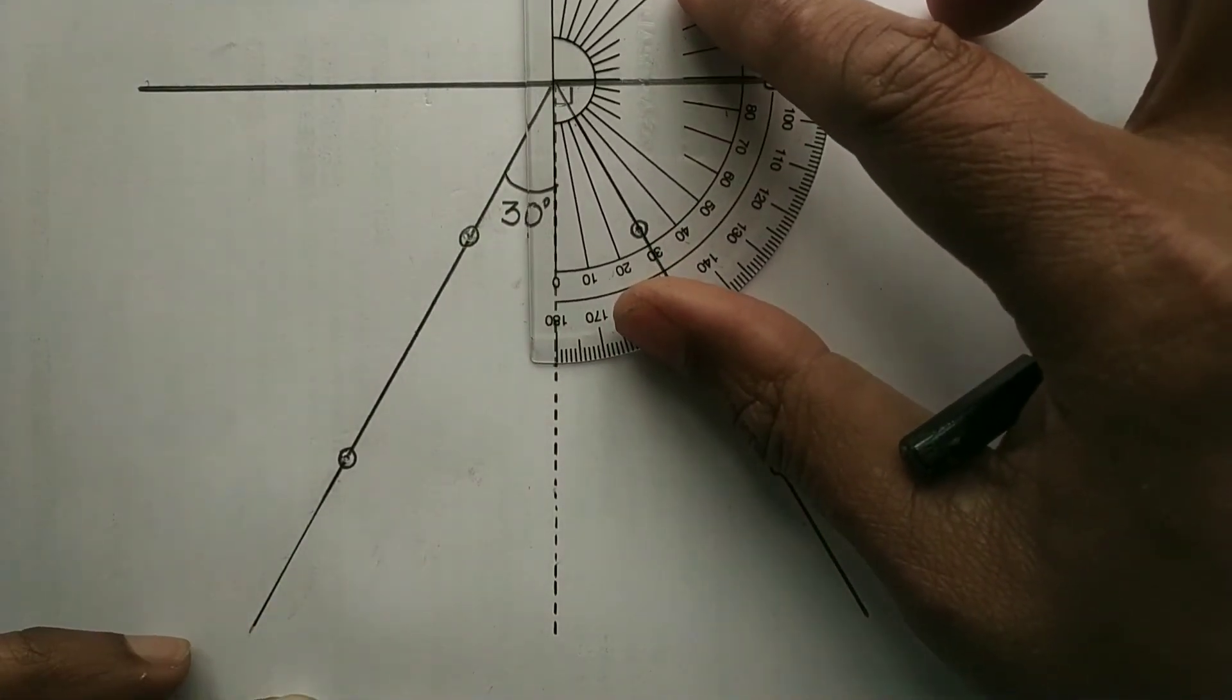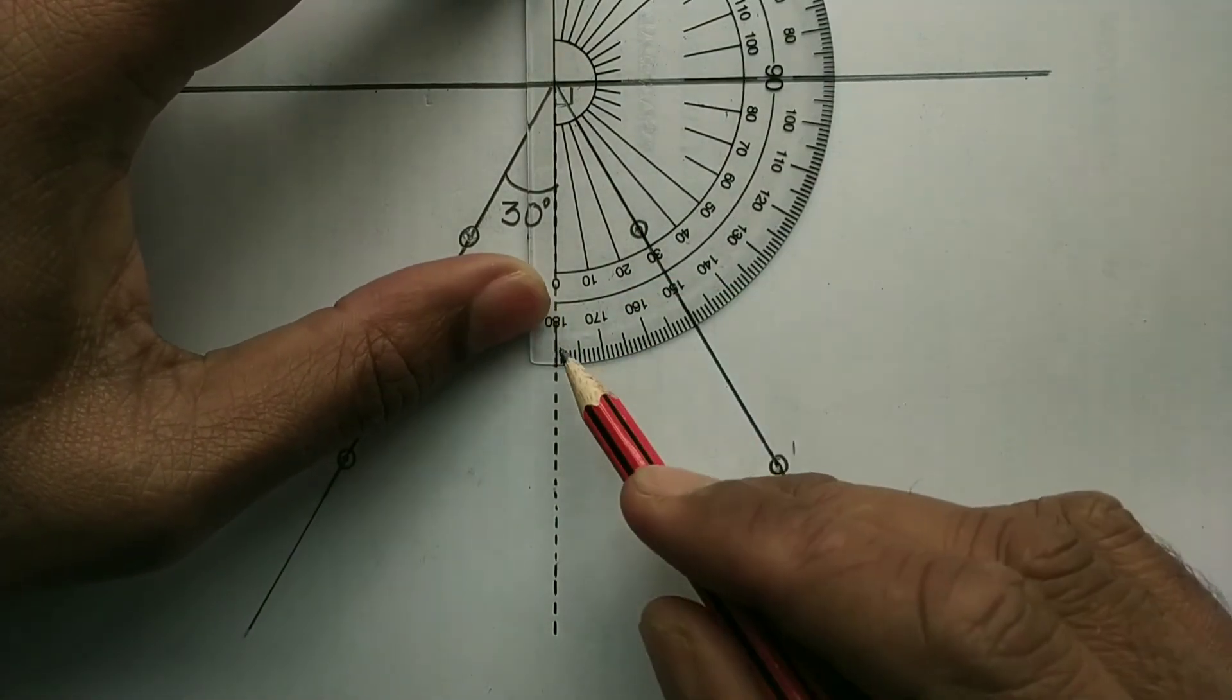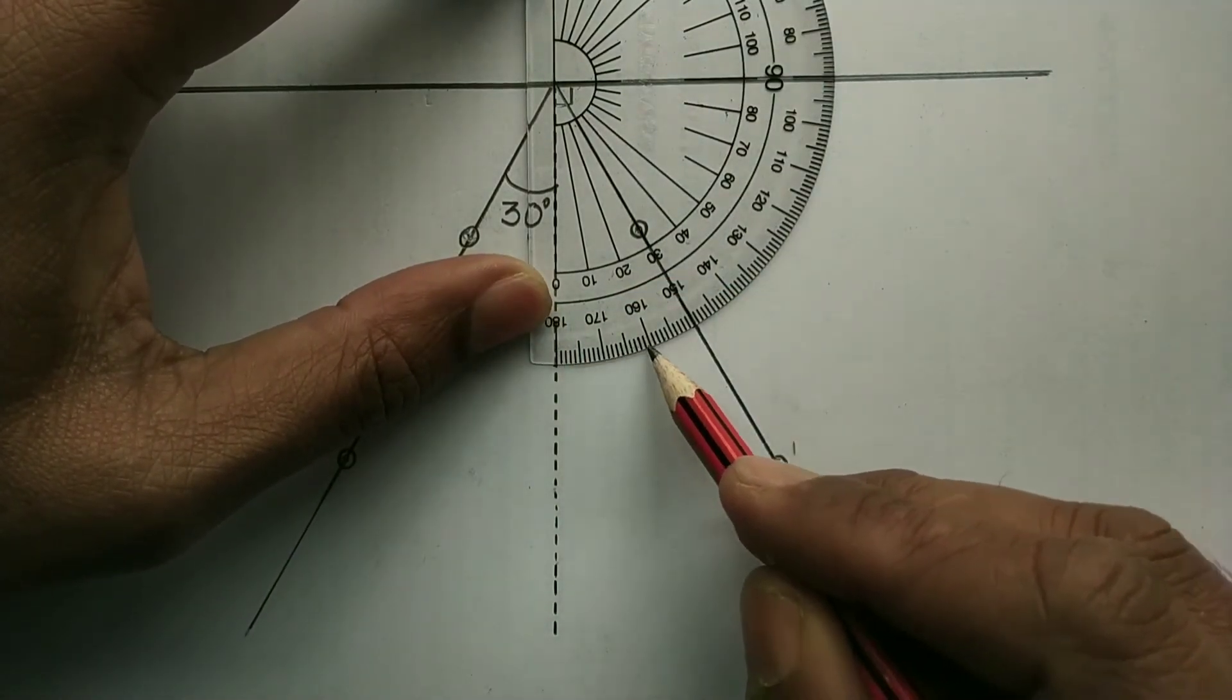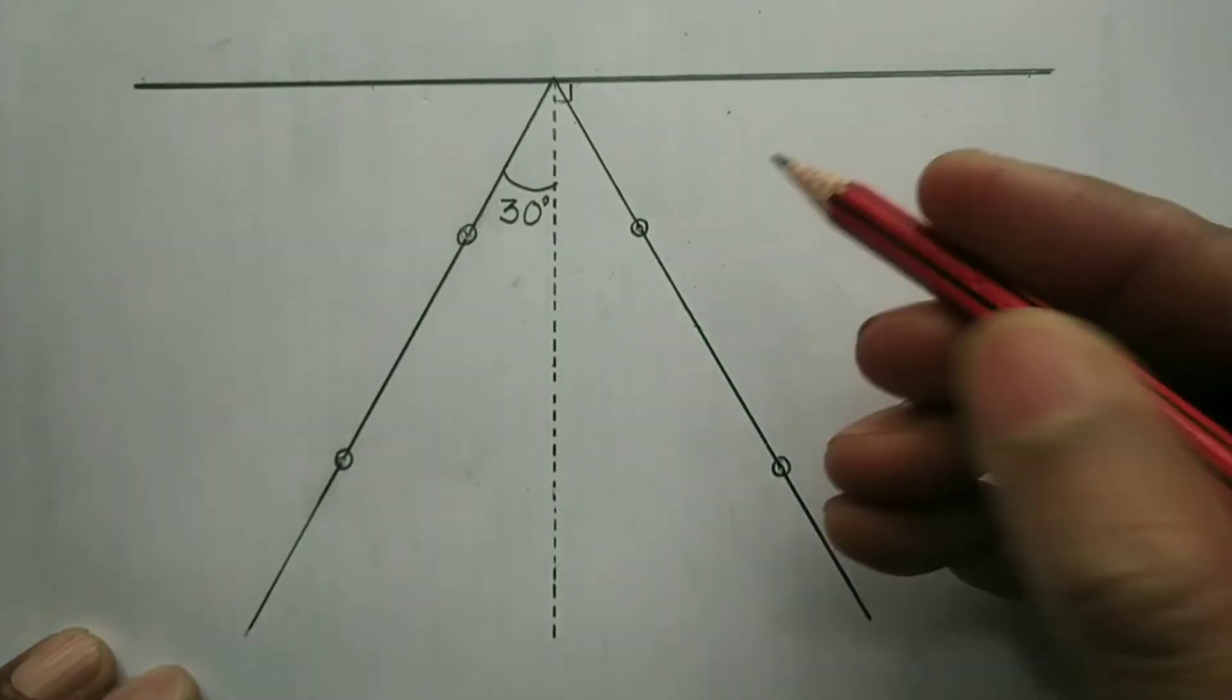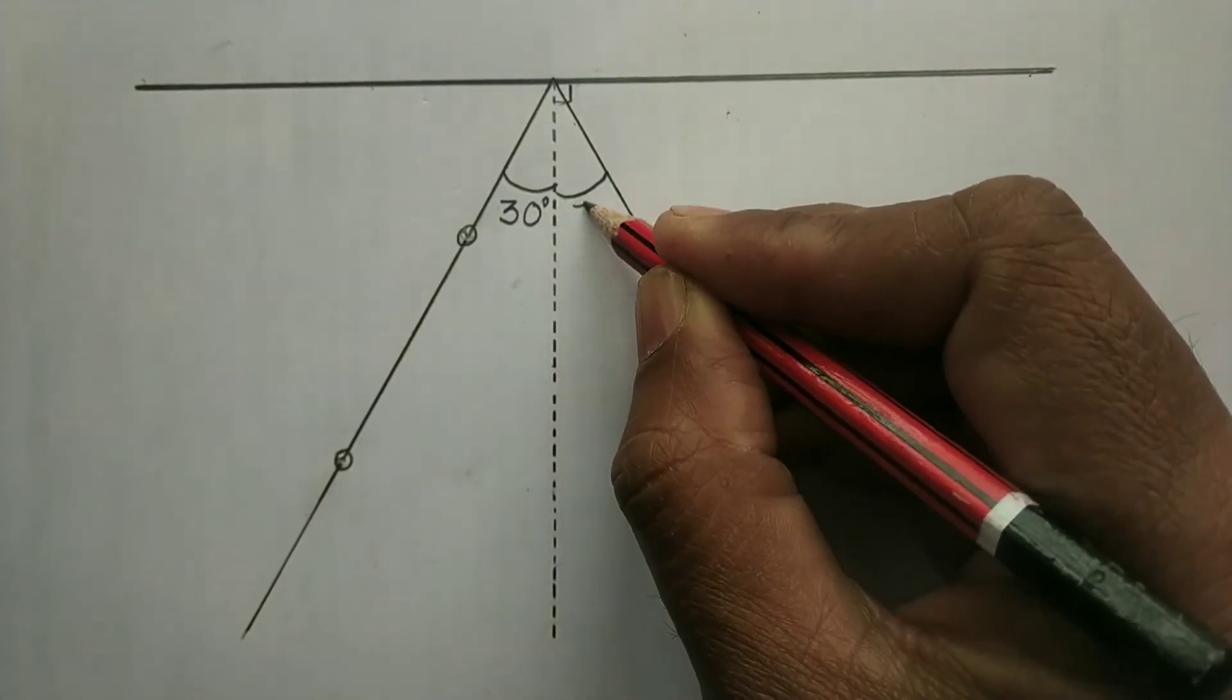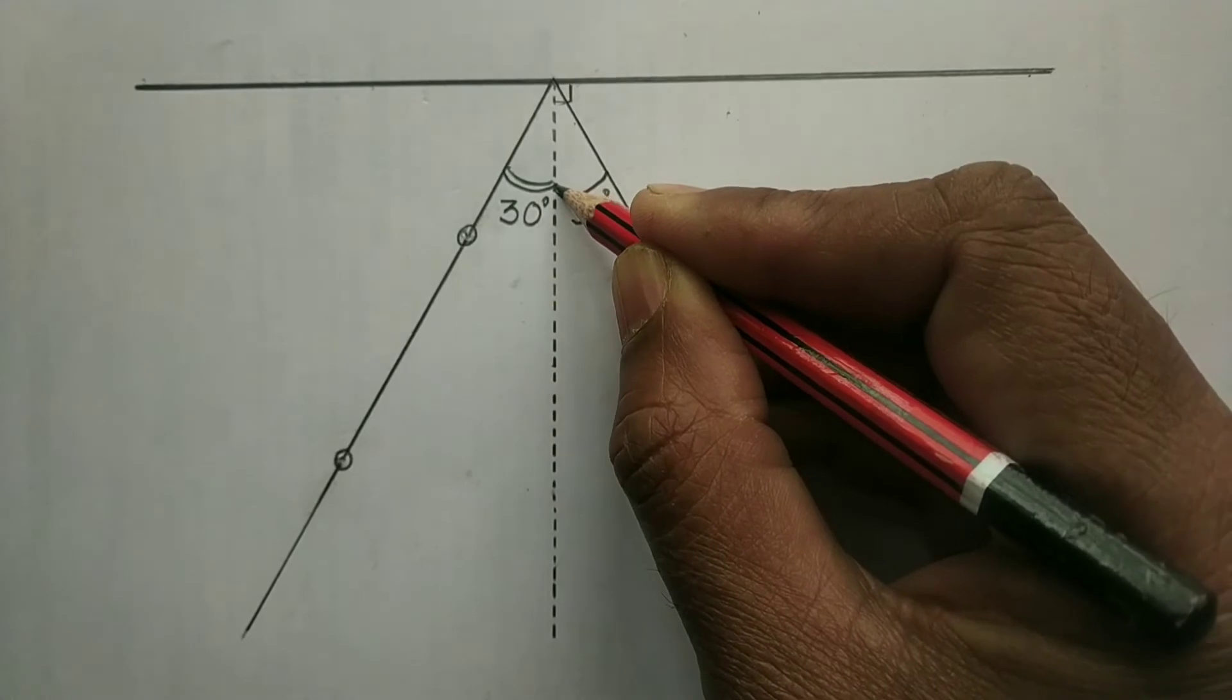Now, using protractor, we can easily measure the angle of reflection. It is the angle which the reflected ray makes with the normal. Now, you can easily see the angle of reflection as measured is found to be 30 degrees which is exactly equal to that of the angle of incidence.